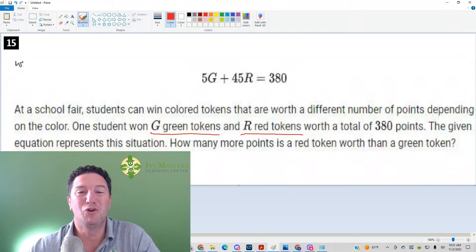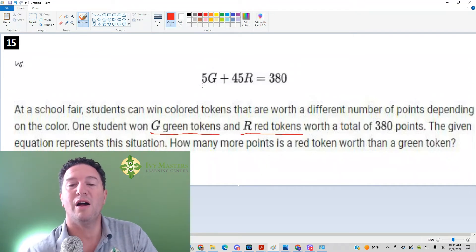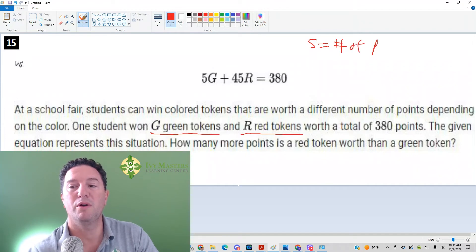What you could do here to better understand what this question is saying is, let's say G is 1. Then I'd read through and say one student won one green token. How many points would they have from that? They'd have 5. Let's say the student won two green tokens, then your G would be 2, and they'd have 10 points from that. So 5 must equal the number of points for a green token.